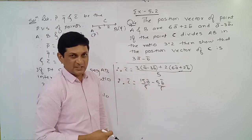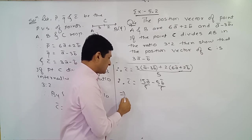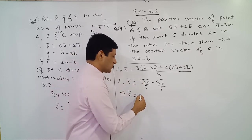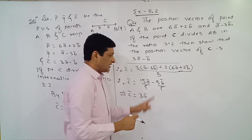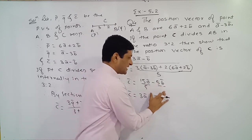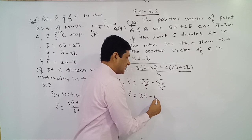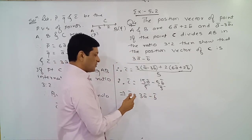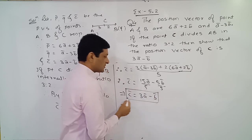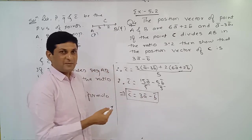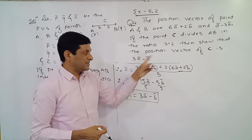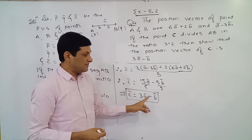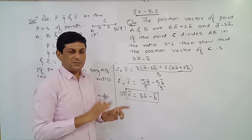Dividing both terms separately by 5: 15 upon 5 equals 3Ā, and 5 upon 5 cancels giving minus B̄. So C̄ equals 3Ā minus B̄. We have obtained the required value of position vector of point C. We have shown that position vector of point C is 3Ā minus B̄.